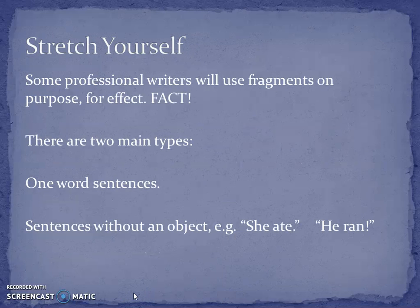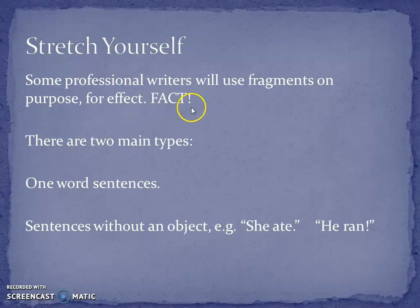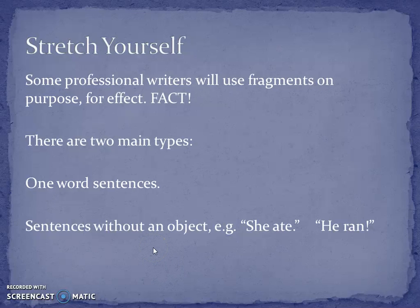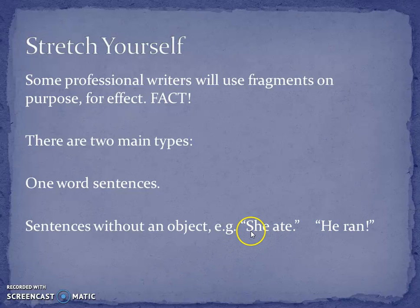Now, if you want to stretch yourself, some professional writers will use fragments on purpose for effect. 'Fact.' This here is a fragment — it's not a whole sentence, but it's been used as one just to catch your eye. There are two main types of this: one is one-word sentences like 'Fact,' and the other is very simple sentences without an object, such as 'She ate' or 'He ran.' If I was writing a story about how I was really hungry, I might end it with 'She ate.' We know what I was thinking about through the story — I was thinking about my lunch. I only need to put that for effect, to surprise the reader, to really emphasize it.